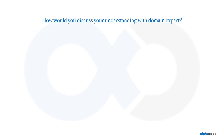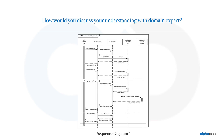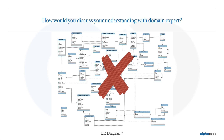Suppose I come from an e-commerce domain and you need to start discussing your understanding of the domain with me, as the domain expert. In the old days we used to discuss using use case diagrams, activity diagrams, sequence diagrams, or ER diagrams. I don't think anyone uses these these days to discuss domains with domain experts. You might use them in internal developer meetings, but these are very old ways to discuss domains with a domain expert.